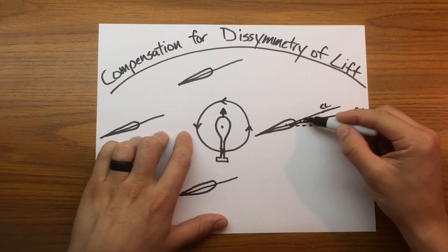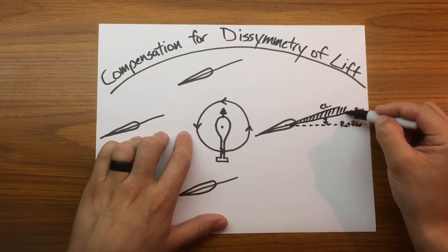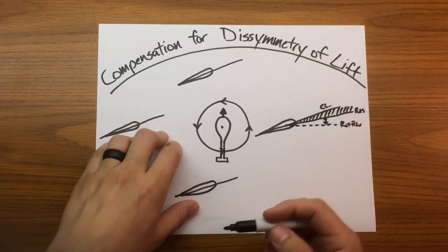So what does this mean? This means that this area right here is our lifting area of the blade. That's how much lift this blade is creating on this side.